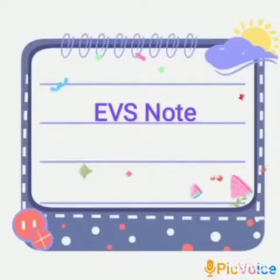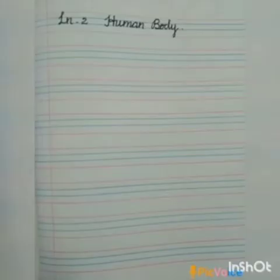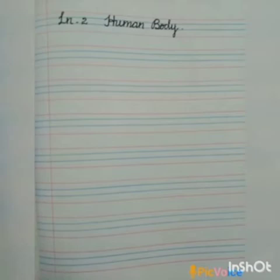Ok Children, take your EBS note. We already have Lesson 1 with 10 dictation words written. We will skip the lines. Next, for Lesson 2, start a new page. First, write Lesson 2: Human Body. In the next line, write Roman numeral 1: Dictation Words.